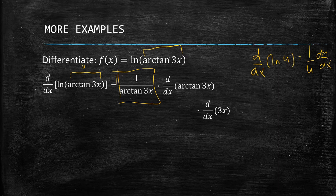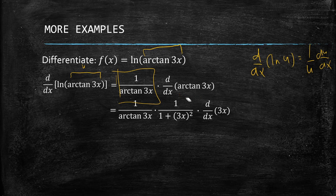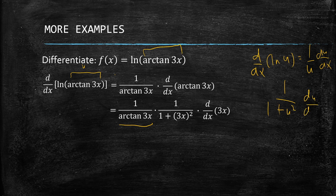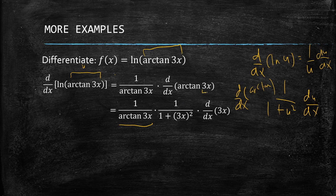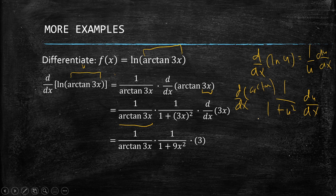The derivative of arctan is 1 over (1 + u²) times du/dx. So we have 1 over (1 + (3x)²), which is 1 over (1 + 9x²). We then get the derivative of 3x, which is 3. Simplifying (3x)² gives us 1 + 9x².